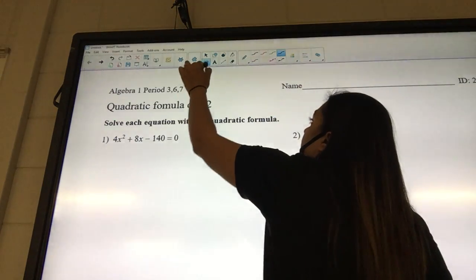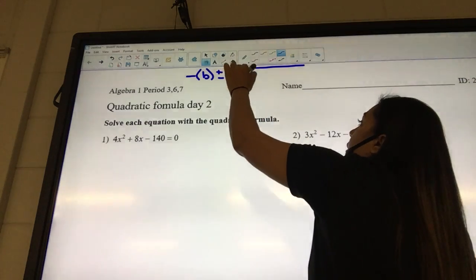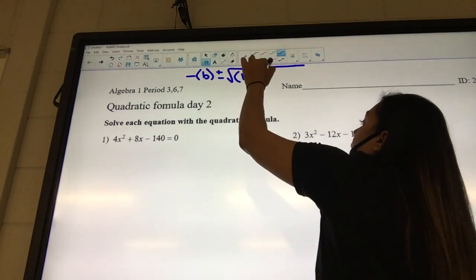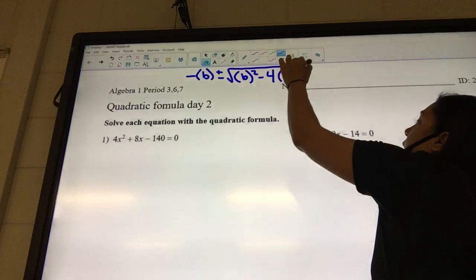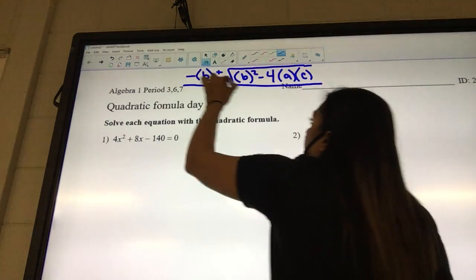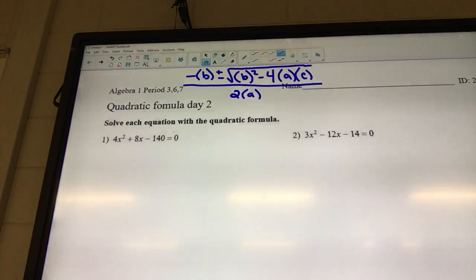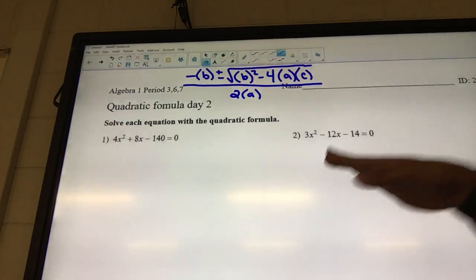So, we got negative B plus or minus the square root of B squared minus 4AC over 2A. Good job. I'm lost, what are you doing? How are you lost? How do you put the plus minus in the calculator? You don't. It's okay, it's fine.